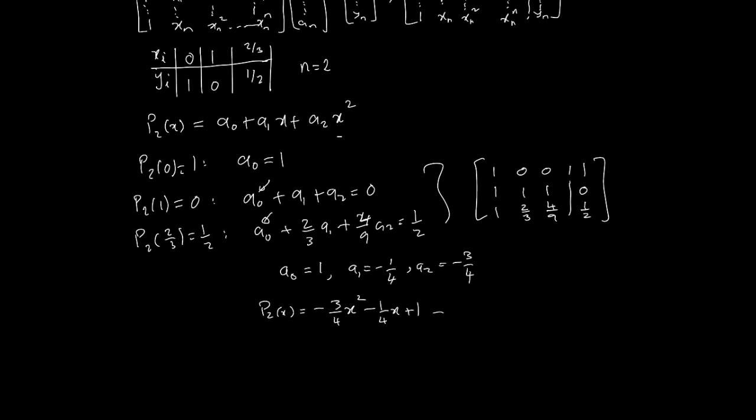And now, of course, you can test this polynomial, because it has to work for all these three data points. They should be exactly obtainable from this. So, just to test it, let's test this quickly. So, you can see that p2 of, when I put 0 in here, I get 1. When I put, for instance, 1 in here, you can see I get minus 3 fourths minus a quarter is minus 1 plus 1 is 0.